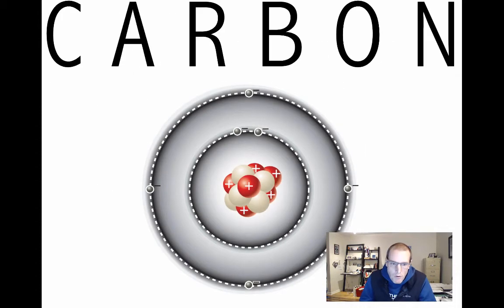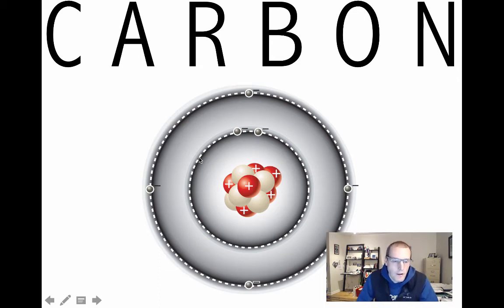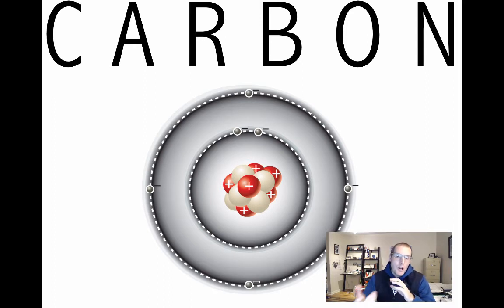Now let's look at the atomic structure of carbon. There's a nucleus with protons — in red with a single positive charge — and neutrons in white with no net charge. There are two orbitals around the nucleus: the inner shell has two electrons and the outer orbital has four electrons. Atoms, to become most stable, want to meet the octet rule, meaning the outer shell should have eight electrons, which they achieve by sharing electrons with other atoms — forming covalent bonds.